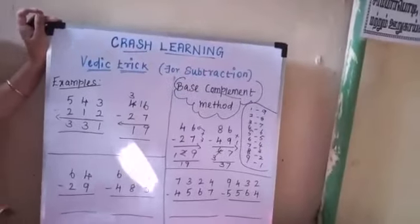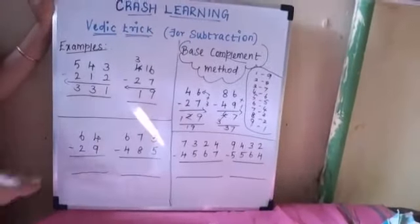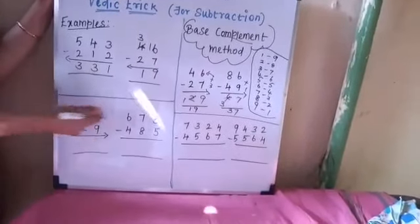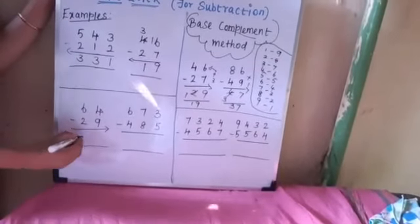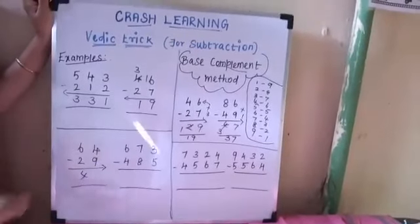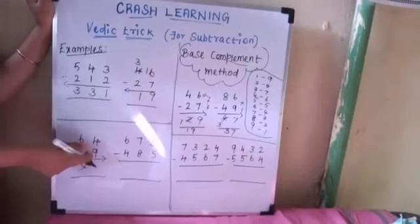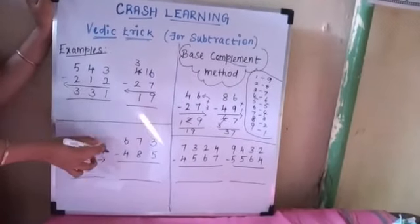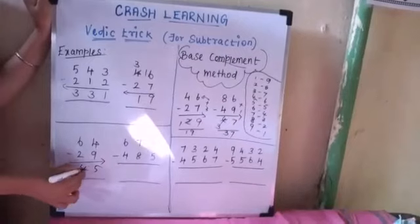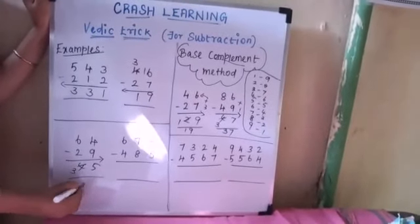Go with another example: 64 minus 29. This is a left-to-right process. 6 minus 2 is 4. Now we need to take the complement. Complement of 9 is 1; 1 plus 4 is 5. We took the complement, so reduce the previous digit by 1. The answer is 35.